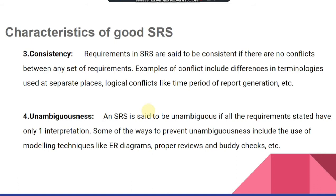The fourth characteristic is being unambiguous. An SRS is said to be unambiguous if all stated requirements have only one interpretation. Ways to prevent ambiguity include the use of modeling techniques like ER diagrams and proper reviews. The system functionality and requirements should be clearly represented with no ambiguity. When there is ambiguity in the document, there is ambiguity in the functionality of the system, and an ambiguous system will not be accepted by the user.